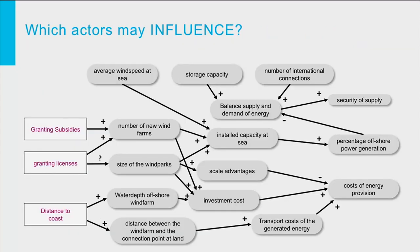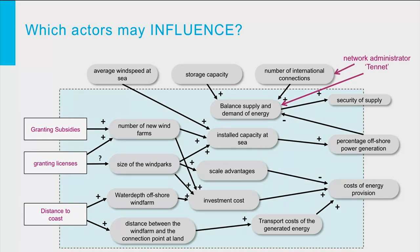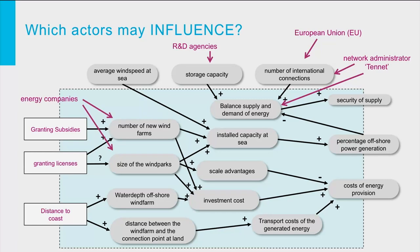Let us start at the right-hand side of the diagram. We first note that Tenet, the distribution network company, can build new international connections. Tenet also manages the operational balance of power supply and demand. The European Union stimulates the international connectivity of the power networks. R&D companies explore and develop new technologies, and these may lead to influential breakthroughs in available storage capacity, as is also concluded in the tutorial on exploring the future. Energy companies may invest in wind farms and thereby influence their number and size. The Ministry of Infrastructure and Environment is a competent authority for management of the North Sea and has an important say over where the construction of wind farms is permitted.